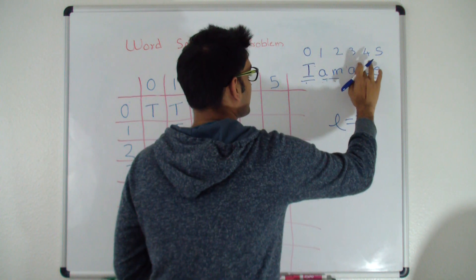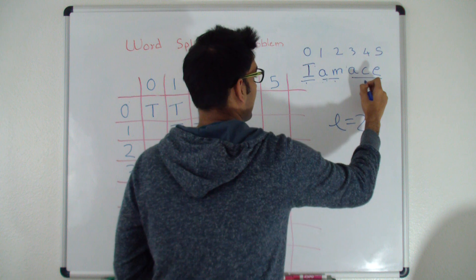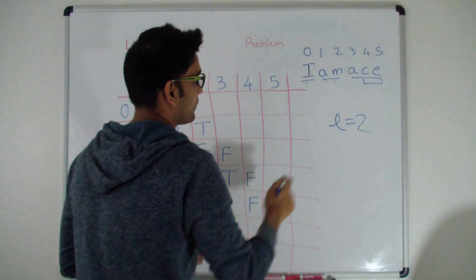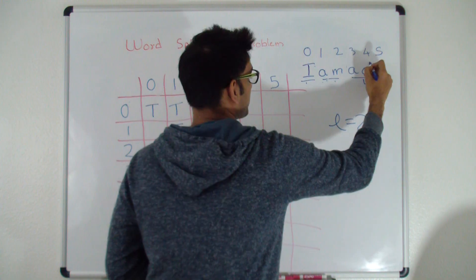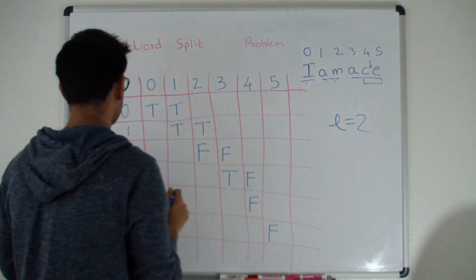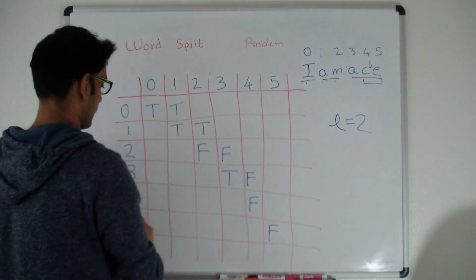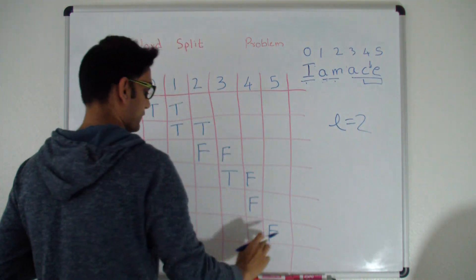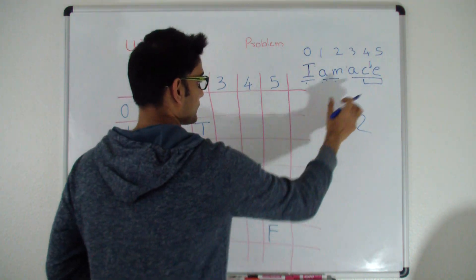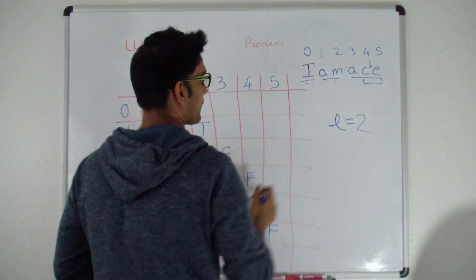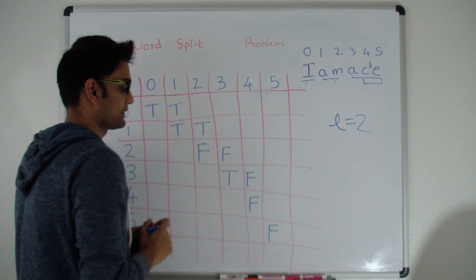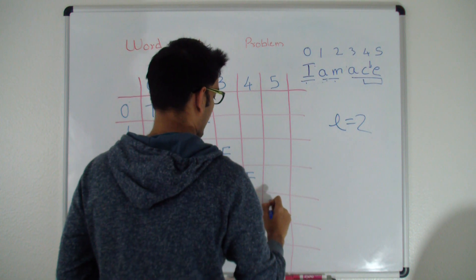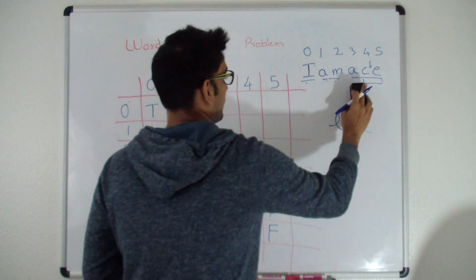Let's look at 'CE'. Does CE belong in the dictionary? No. We try to split it: C at (4,4) is false, and E at (5,5) is also false. So CE cannot be split such that each word is in a dictionary. CE is false, so (4,5) is false.